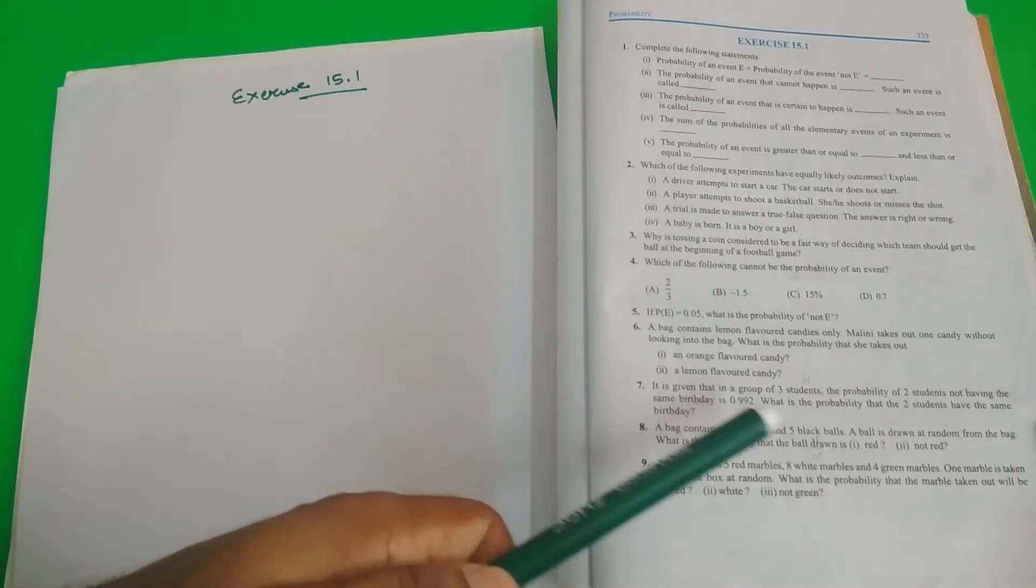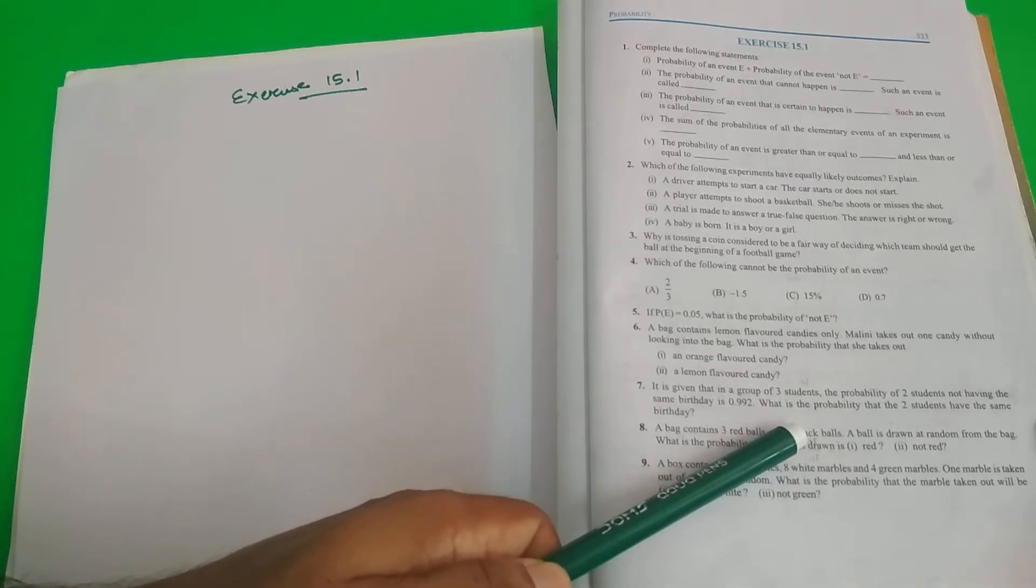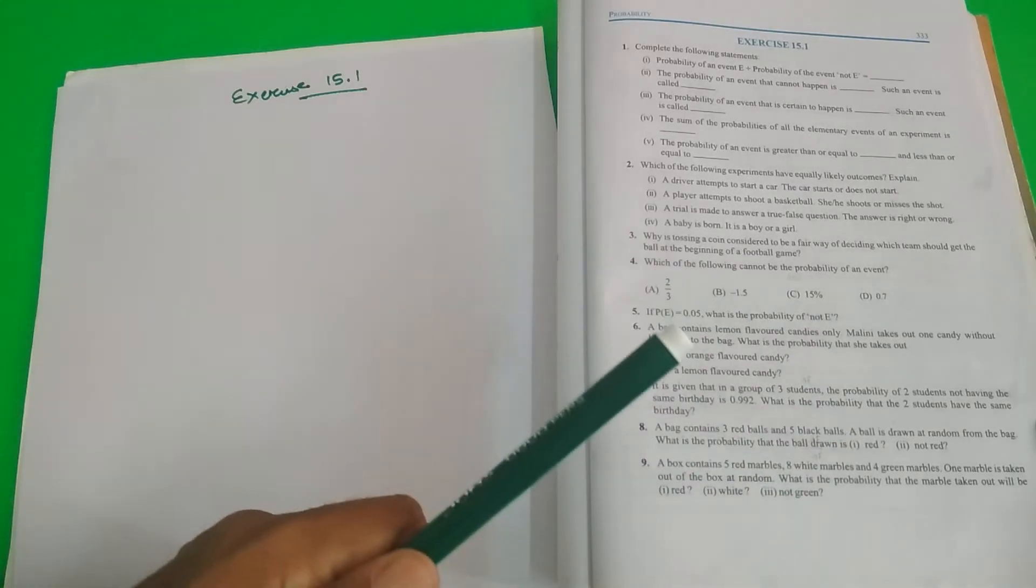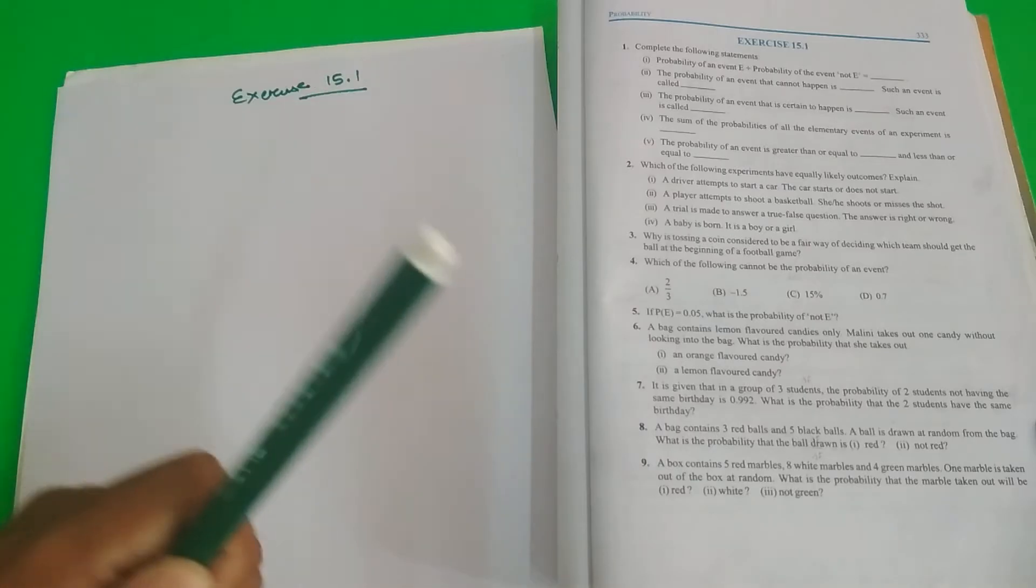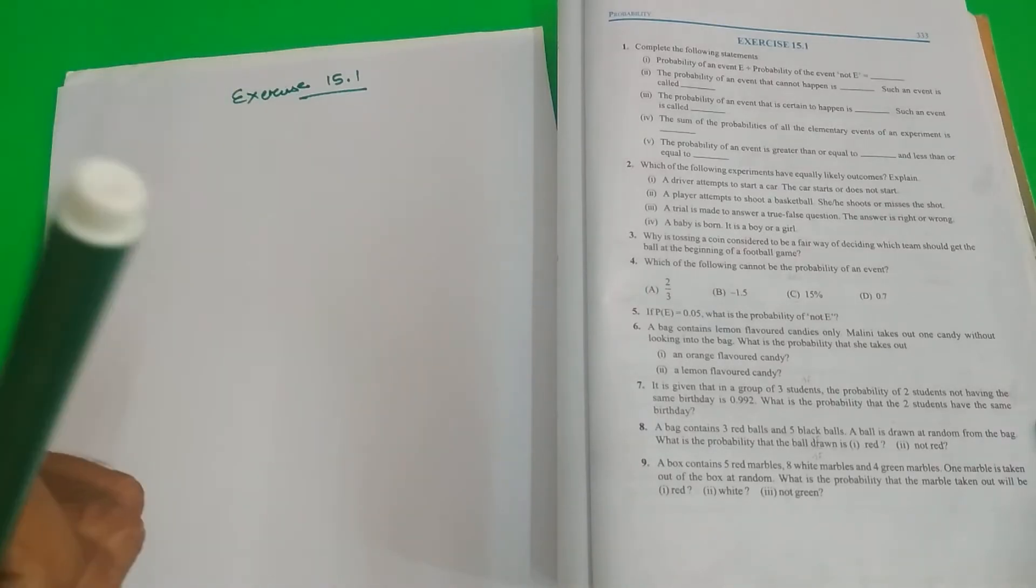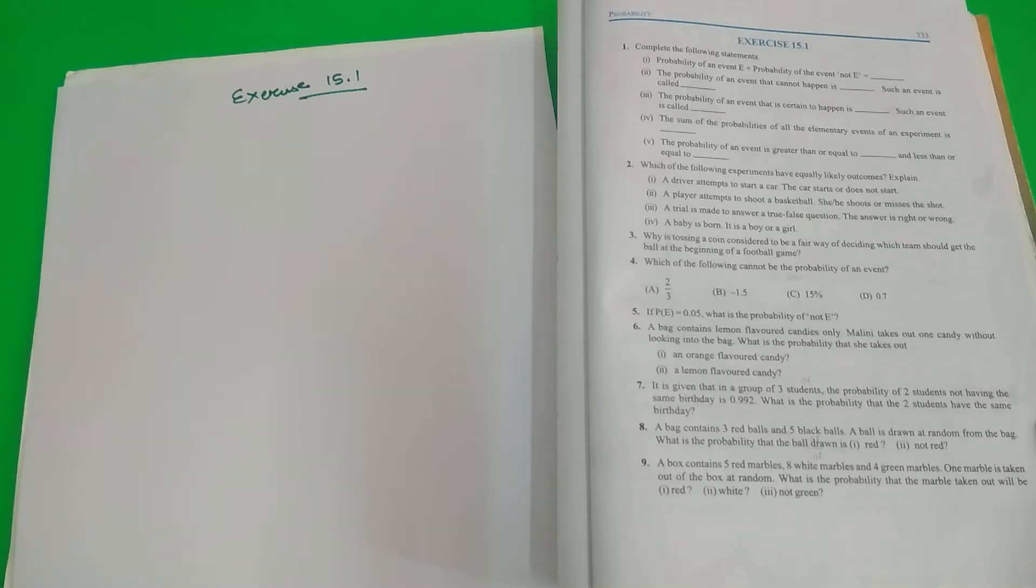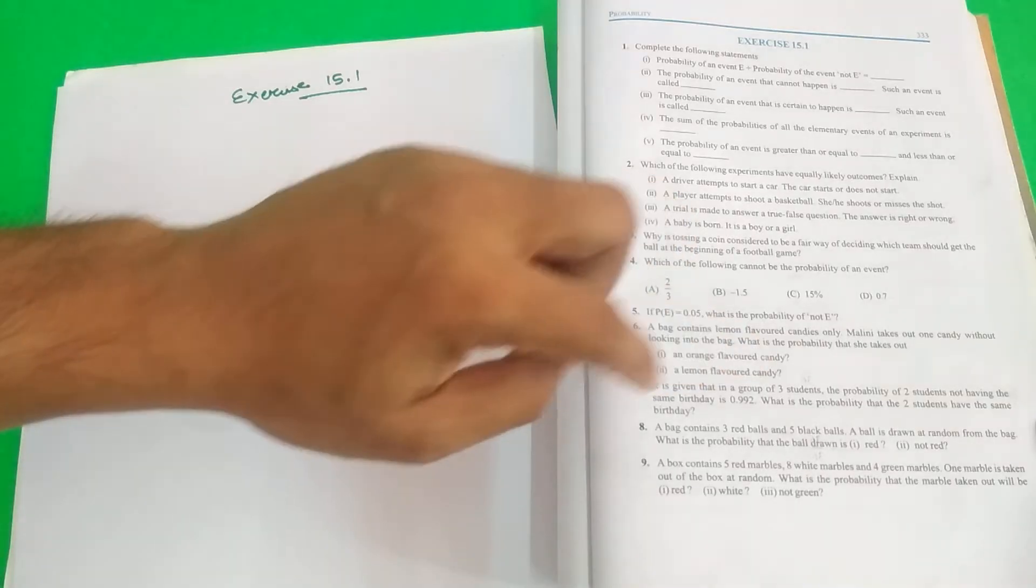It is given that a group of 3 students, in a group of 3 students, the probability of 2 students not having the same birthday is 0.992. What is the probability that the 2 students have the same birthday? We need to find 2 have the same birthday.